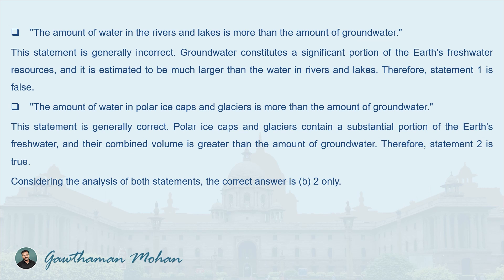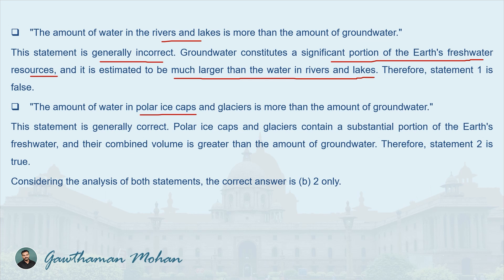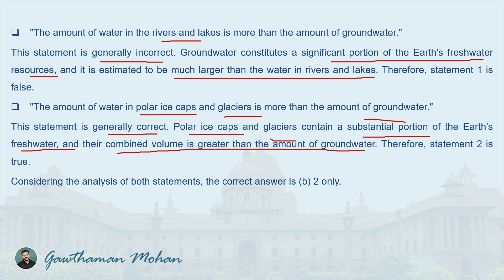Looking at the answer: Statement one — the amount of water in rivers and lakes is more than groundwater — is incorrect, because groundwater constitutes a significant portion of Earth's fresh water and is estimated to be much larger than water in rivers and lakes. Statement two — polar ice caps and glaciers contain more water than groundwater — is correct, as their combined volume is greater than groundwater. Therefore, the correct answer is B: only statement two is true.